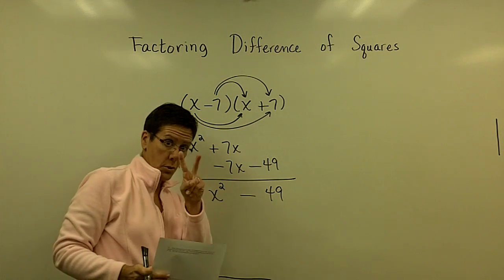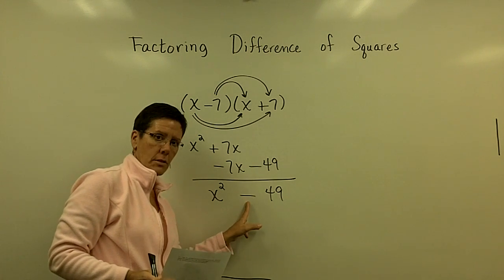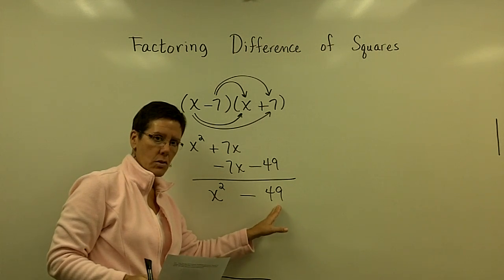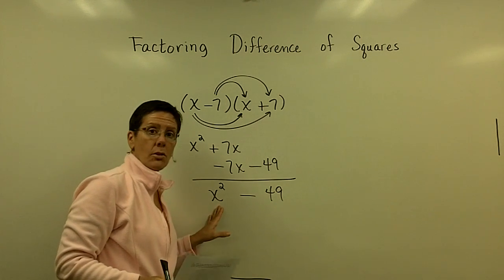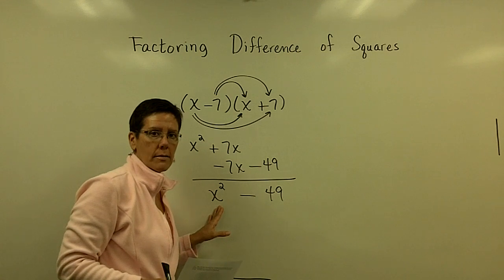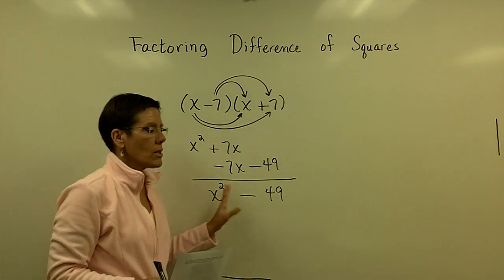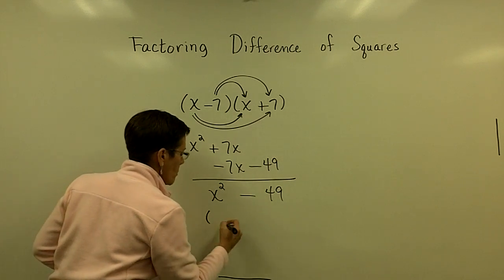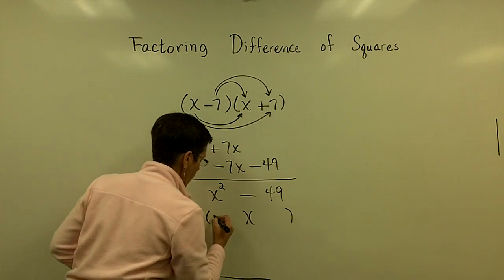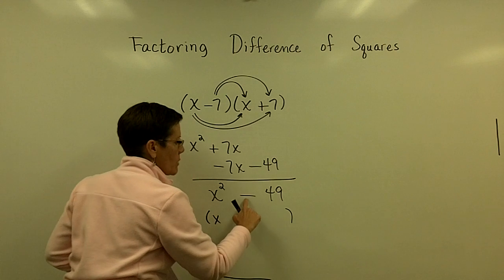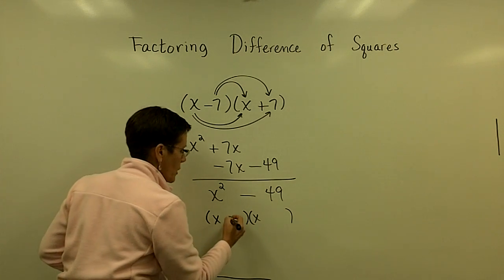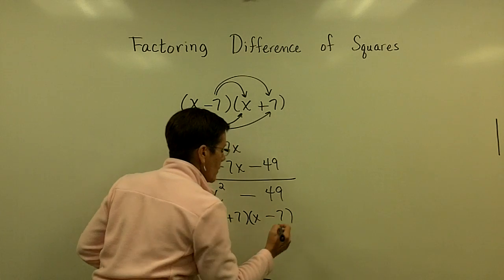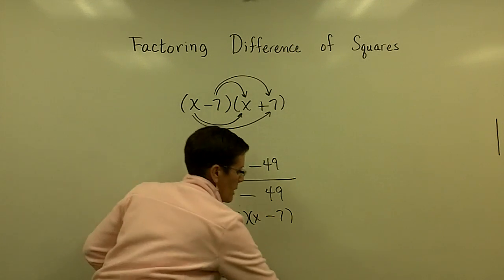This right here is called the difference of squares. It's two terms. This is a perfect square — I can take the square root of it. The square root of x squared is x. I call this the difference of squares, and I factor it back into the binomial with x in the front. Because I want the product to be minus 49, one binomial gets a plus 7 and the other gets a minus 7.